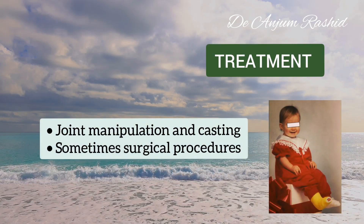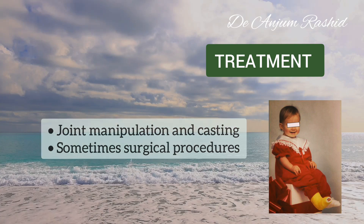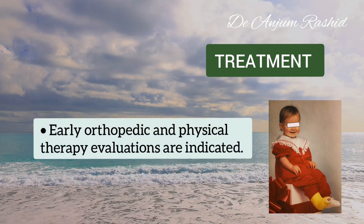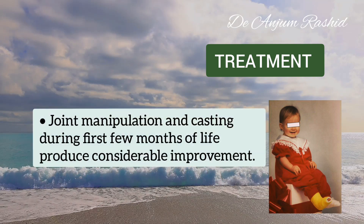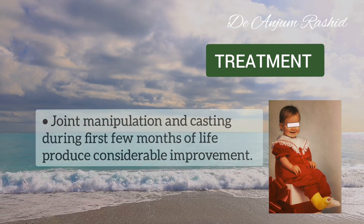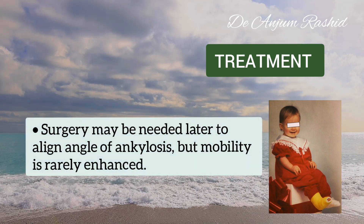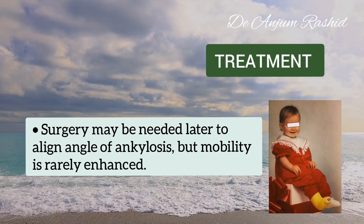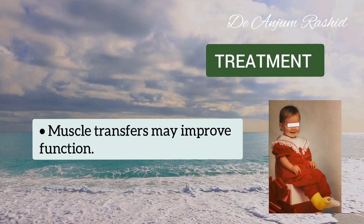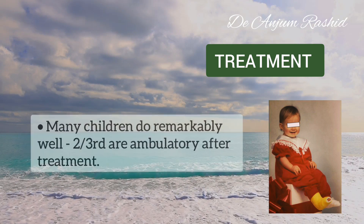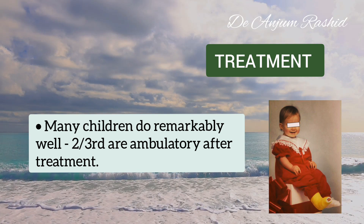The treatment of arthrogryposis multiplex congenita is by joint manipulation and casting, and sometimes surgical procedures. Early orthopedic and physical therapy evaluation are indicated. Joint manipulation and casting during the first few months of life may produce considerable improvement. Orthotics may also be helpful. Surgery may be needed later to align the angle of ankylosis, but mobility is rarely enhanced. Muscle transfers may improve function — for example, surgically moving the triceps so that it can flex the elbow. Many children do remarkably well, and two-thirds are ambulatory after treatment.